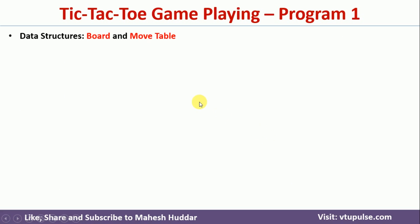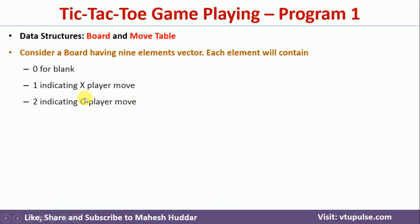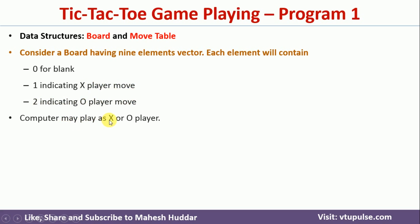The board data structure works as follows: all zeros means the board is blank. If a cell has the value 1, it means an X player move; if it has the value 2, it means an O player move. A computer may play either X or O, but X will always be the first player.